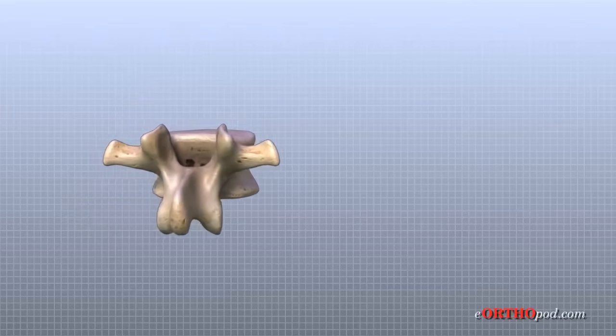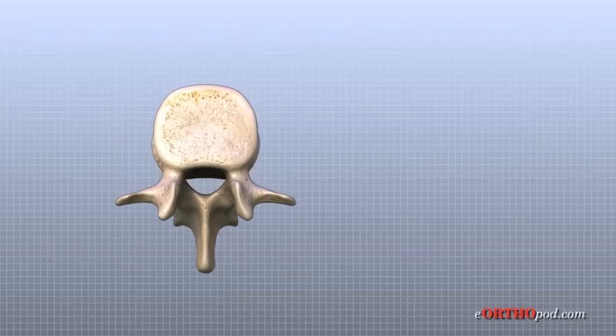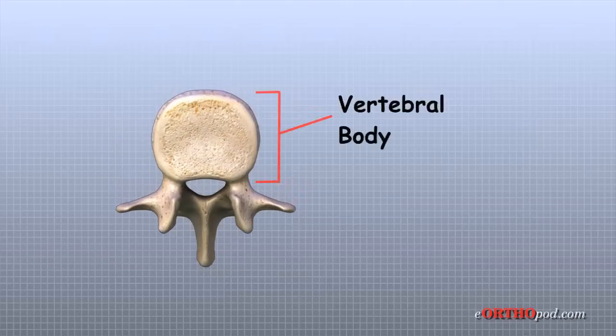Each vertebra is formed by a round block of bone called a vertebral body. The lumbar vertebral bodies are taller and bulkier compared to the rest of the spine. This is partly because the lumbar spine has to withstand pressure from body weight and from daily actions like lifting, carrying, and twisting.